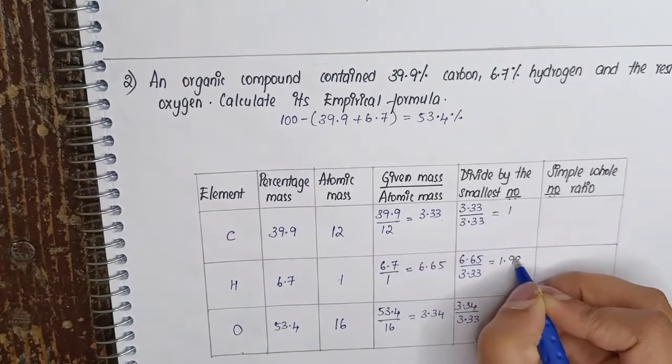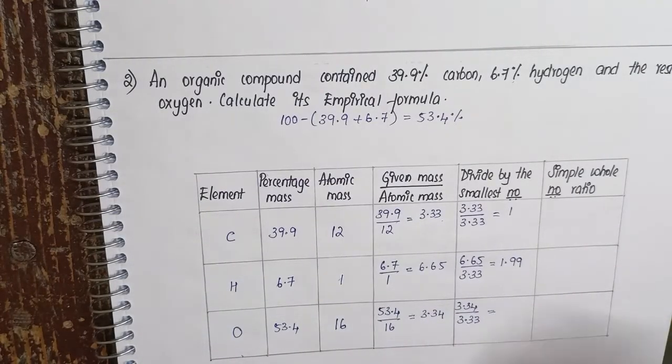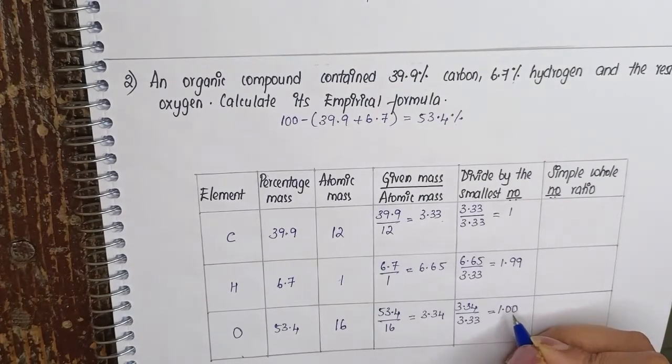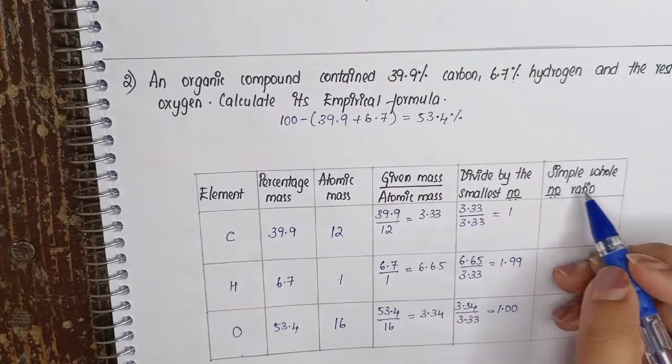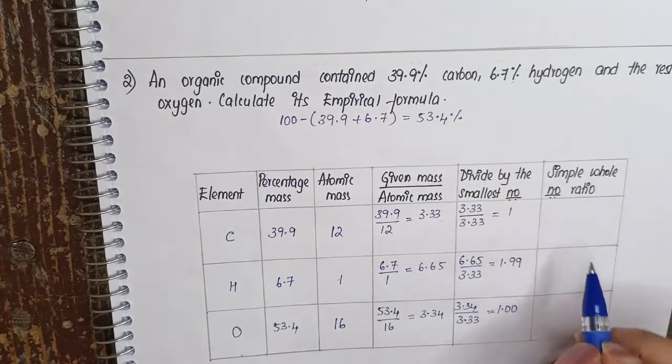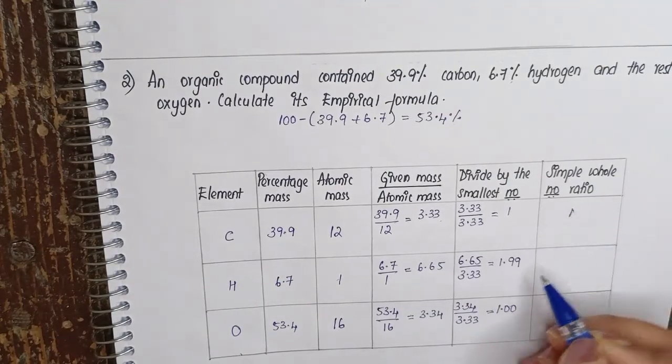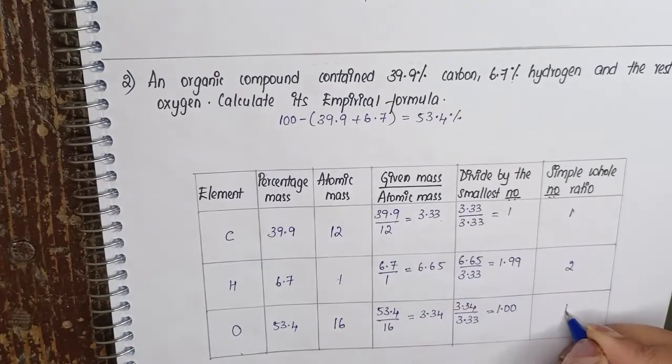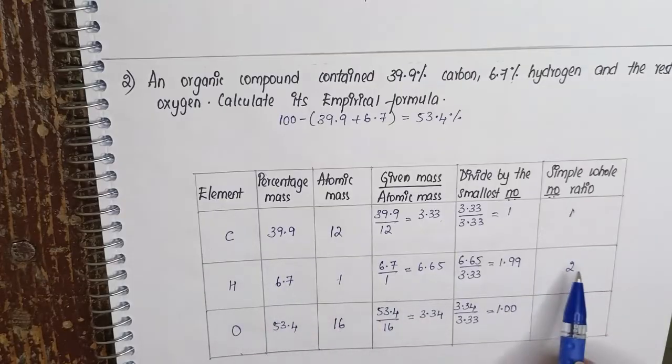And here you will get 1.00. In this case, all of these are in decimal form. We need to convert them into simple whole number ratio. This will remain the same, 1.99 can be rounded off to 2, and this will remain as 1. So now the ratio is: carbon 1, hydrogen 2, oxygen 1.